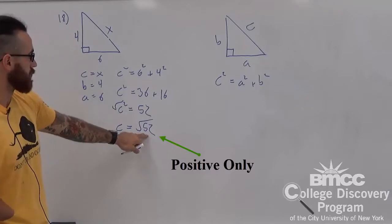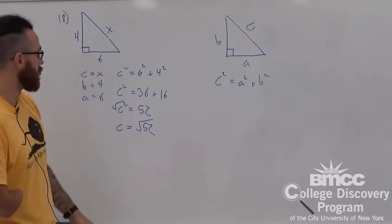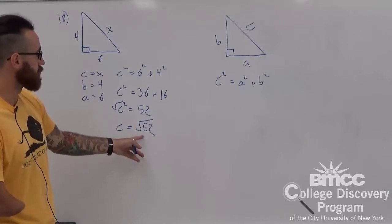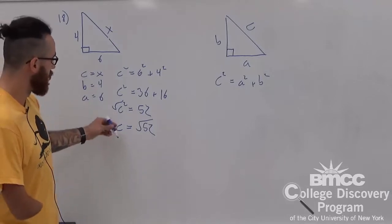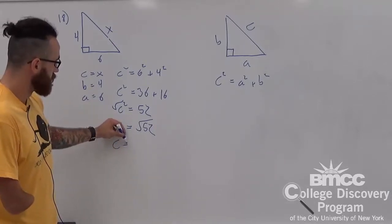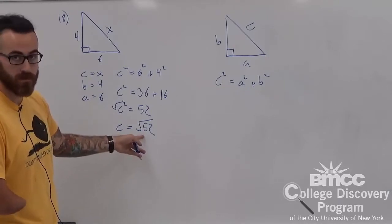Now, if you look at this, there's no perfect square. So, we need to think what two terms multiplied by each other are going to equal to 52, and help simplify. So, two terms are 4 times 13.